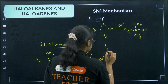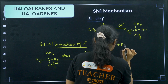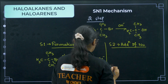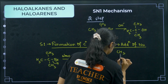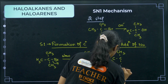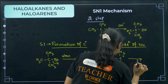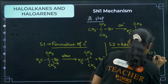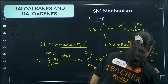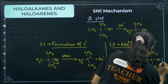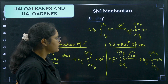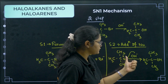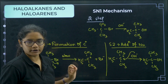Step two is the attack of nucleophile. The carbocation CH₃C(CH₃)₂⁺ is attacked by OH⁻, which attacks from this side, and we get CH₃C(CH₃)₂OH. This is the addition of nucleophile in step two, and finally we get the product. Those are steps one and two of SN1.